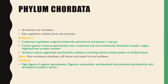Finally, we are under the phylum Chordata, which basically means we are vertebrates — including fish, amphibians, reptiles, birds, and mammals. We are coelomate triploblastic organisms because we are bilaterally symmetrical and possess a one-way gut. Our coelom is greater in extent proportionally because it is more continuous and extensively developed, allowing for more complex organs organised into complex systems such as our digestive system. The vertebral column is segmented into muscle blocks and the skeleton consists of an internal jointed system of calcified bones. Non-vertebrate chordates have a stiff dorsal rod instead of a true backbone. In terms of feeding, we have a high degree of regional specialisation so digestion is extracellular and absorbed food products are distributed by a well-developed circulatory system.